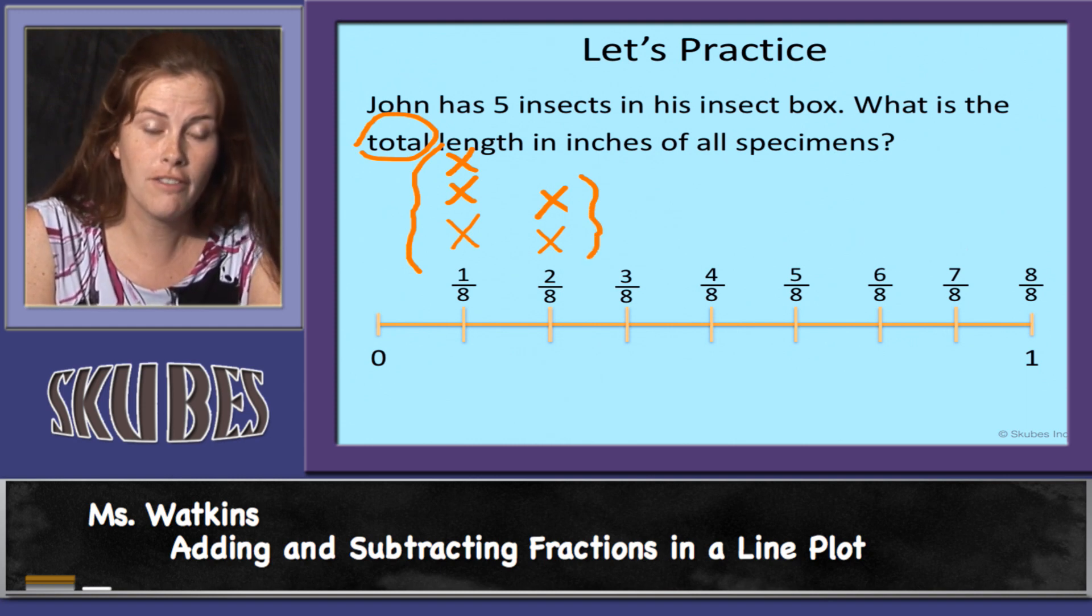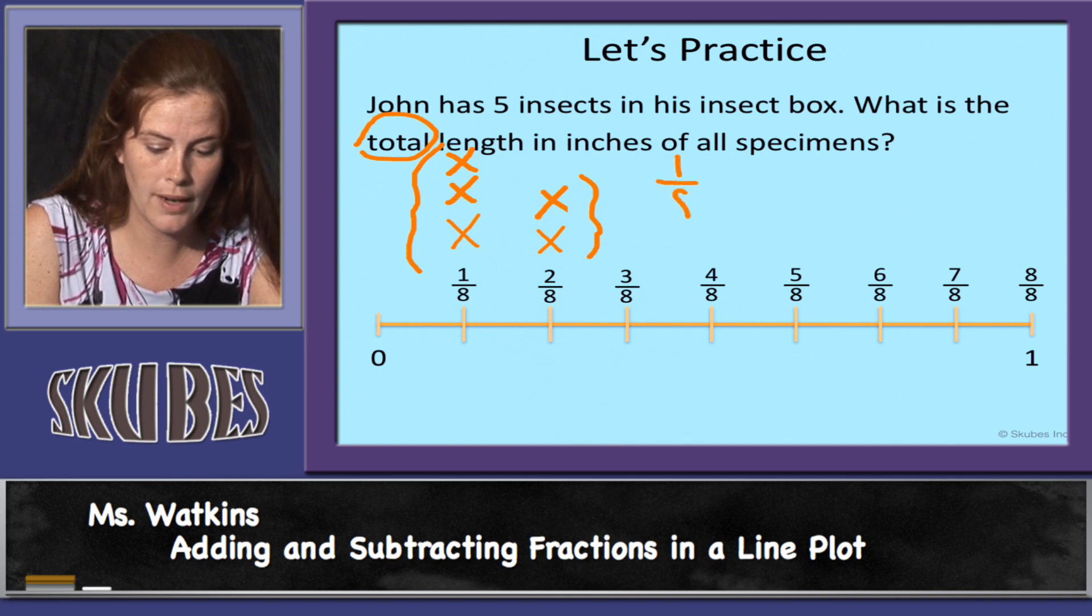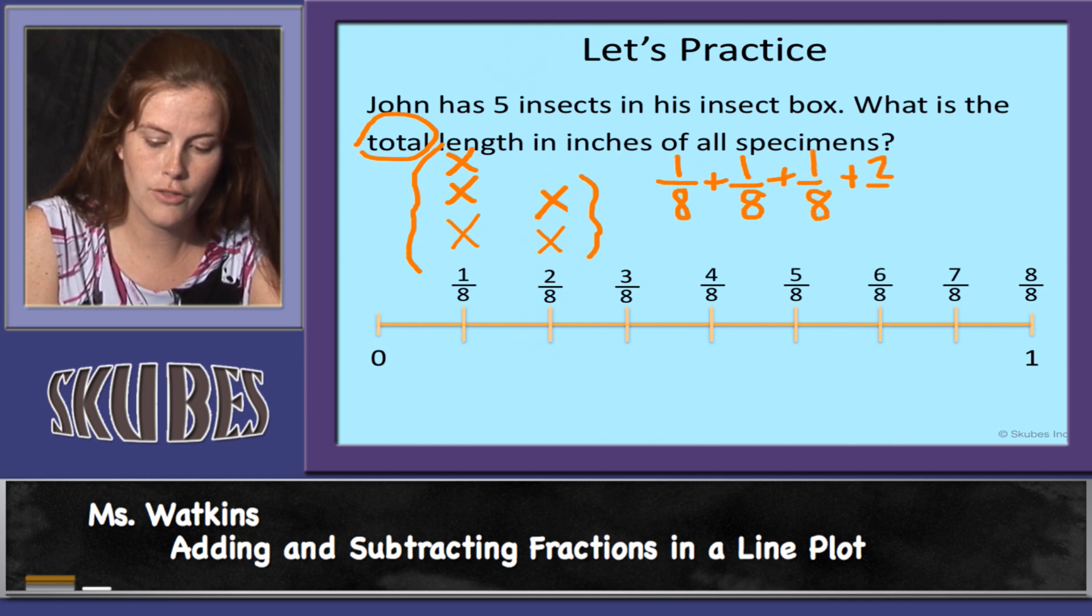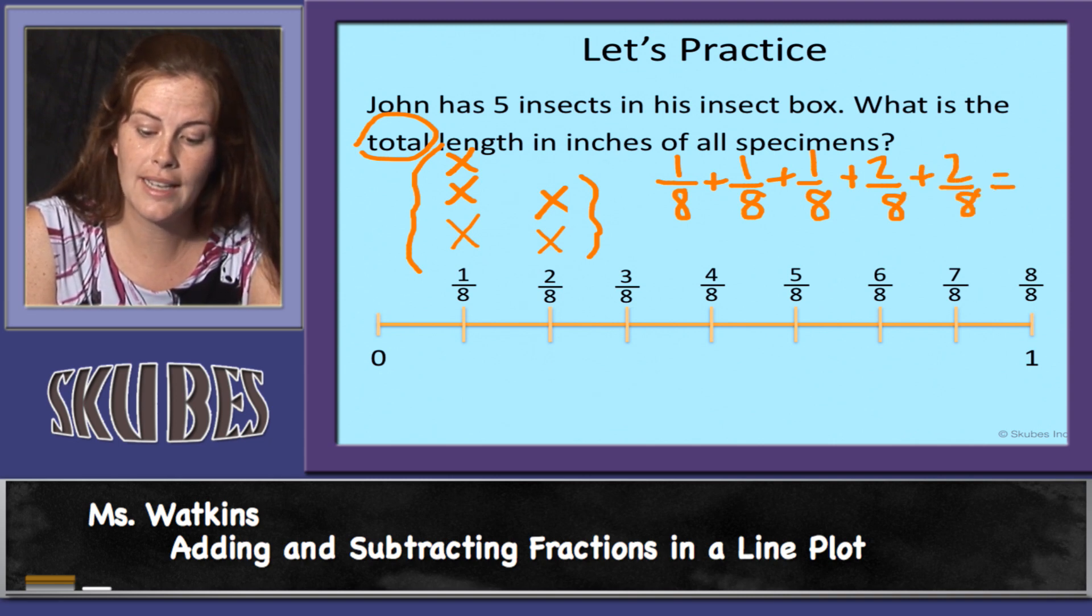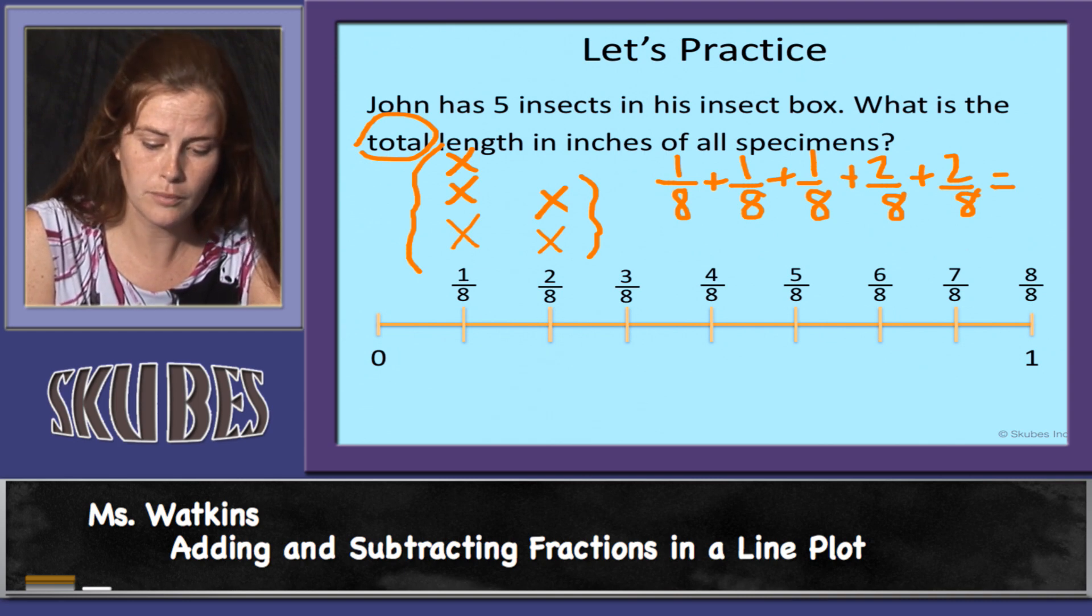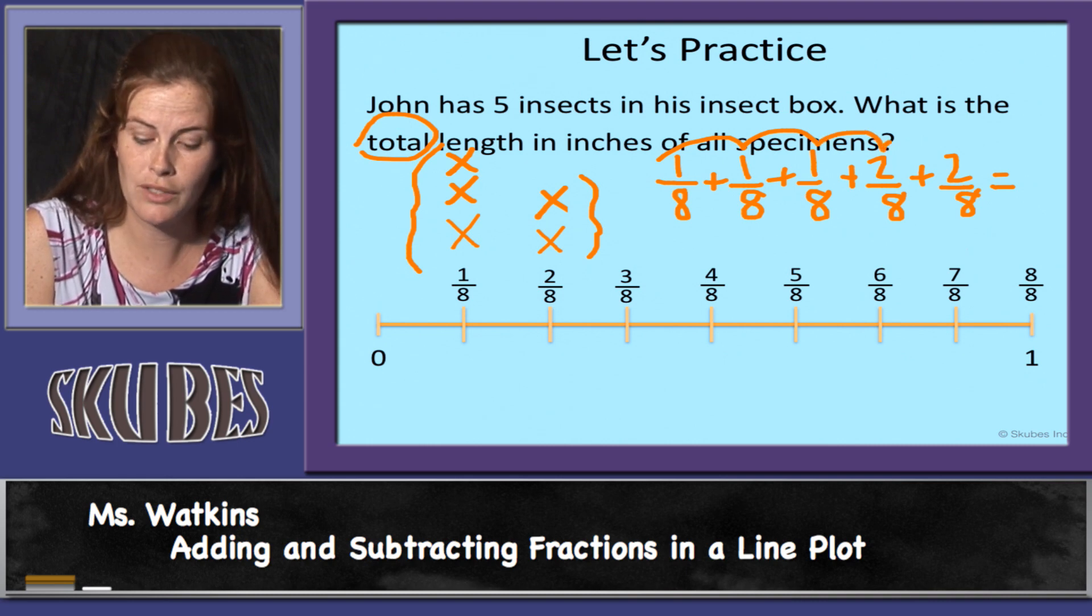So we need to add all of these together. We have one-eighth plus one-eighth plus one-eighth, and we have two-eighths plus two-eighths. Now to add all of these together, we need to add our numerators first. So we have one plus one equals two, plus one equals three, plus two equals five, plus two more equals seven.